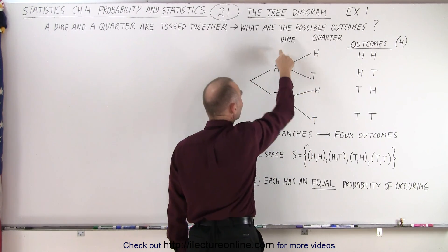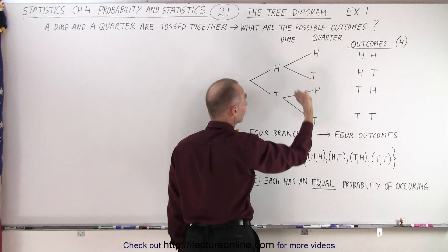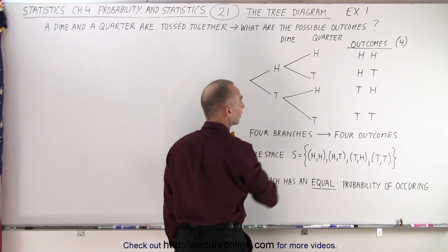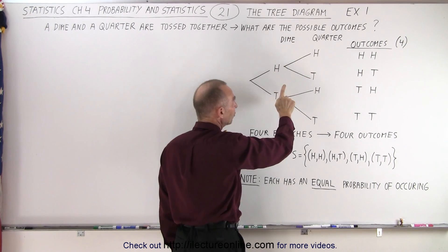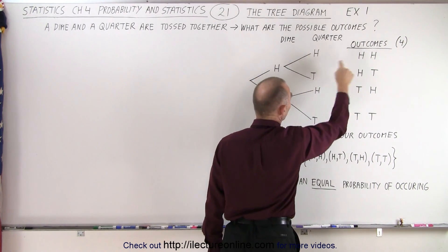And if the dime is tails, there are two possibilities for the quarter, heads and tails again. So if we look at all the various combinations, we have four possible outcomes.